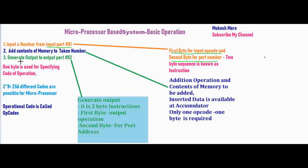The contents of memory are added to the accumulator and addition is performed. For the third step — generating the output to output port 2 — it also requires a two-byte instruction: the first byte for the output operation and the second byte for the port address. So for generating the output, the first byte is for the output operation and the second byte is for the port number where to generate the output.